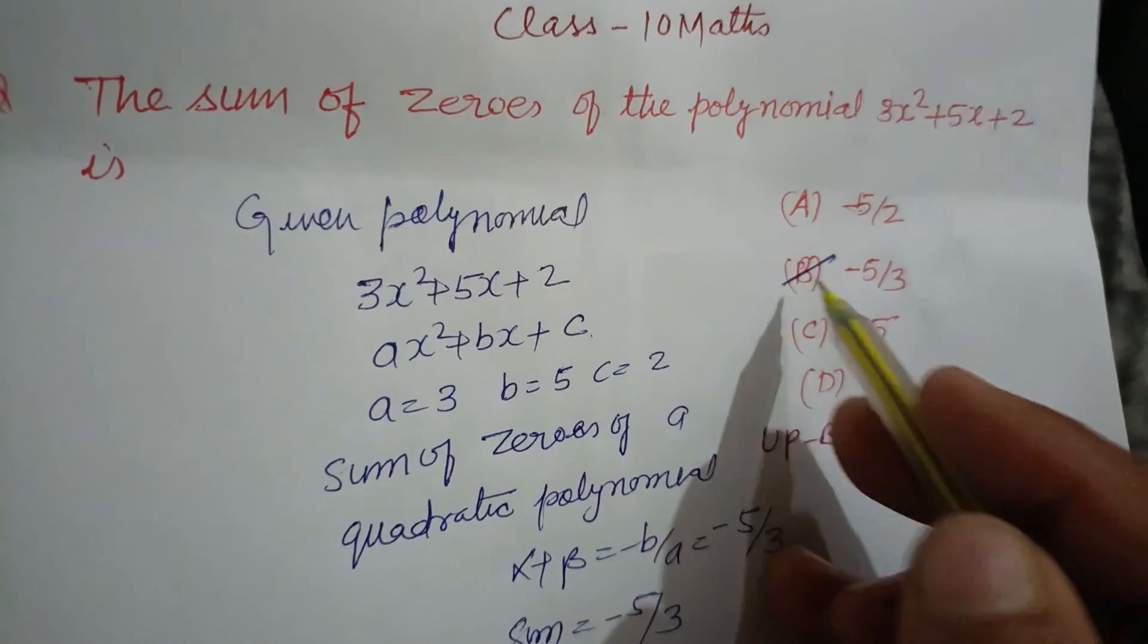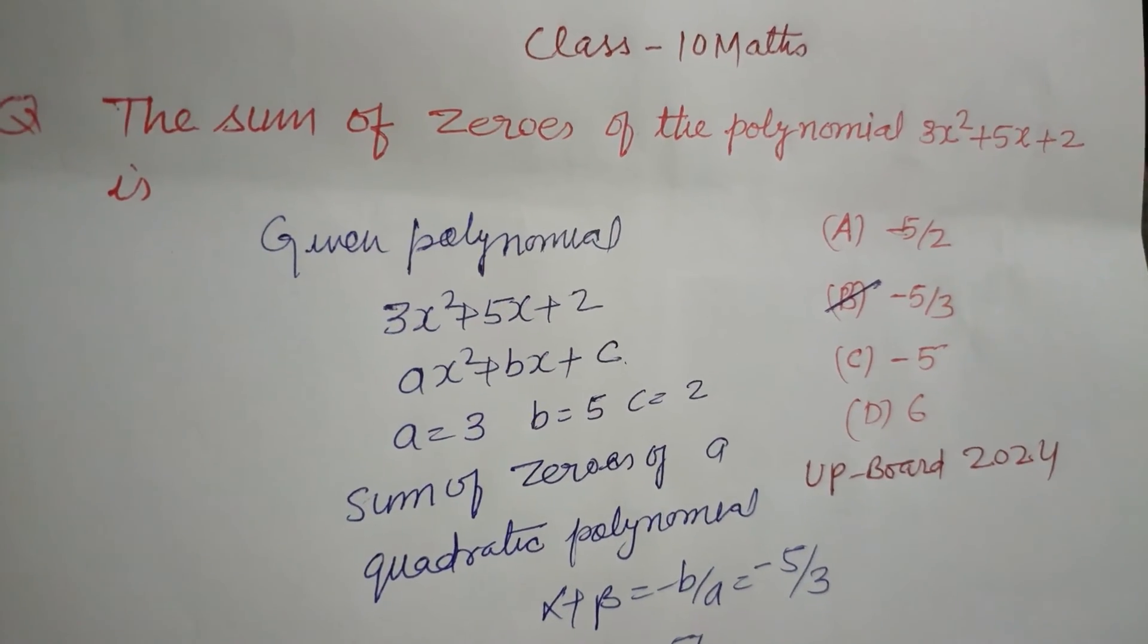So -5/3 is the correct answer which is found in option B. Therefore option B is correct. I hope you got it.